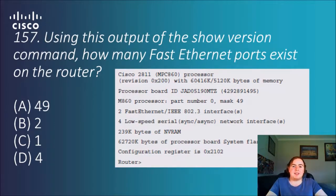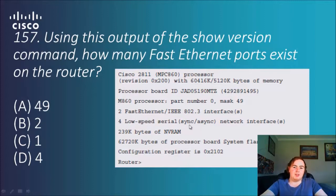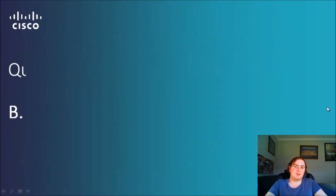Question 157: Using the output of the show version command — a very handy command, keep that in mind for the next few questions — how many fast ethernet ports exist on the router? Looking at the output, it tells us right there: two fast ethernet interfaces and four serial network interfaces. The question asks for fast ethernet, and the answer is two.